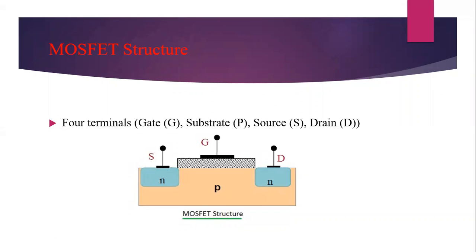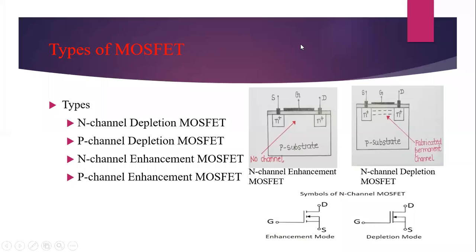The structure of MOSFET: it is a four-terminal device — gate, substrate, source, and drain. The source and drain are made of the same type of semiconducting material. If source is N-type then drain is also N-type. Based on that we define the type of the MOSFET: if the source is N-type it is NMOS, and if the source is P-type it is PMOS. There are two basic types of MOSFET: depletion and enhancement, further classified into N-channel and P-channel.